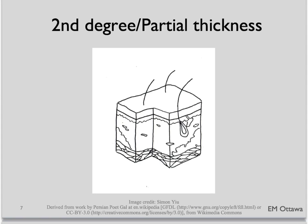Second degree burn, or partial thickness burn, occurs when the epidermis and also some part of the dermis are affected. Because of the different depths of the dermis involved, it is further divided into superficial partial thickness and deep partial thickness.